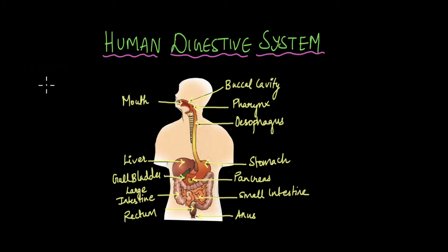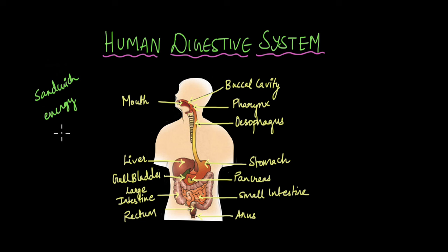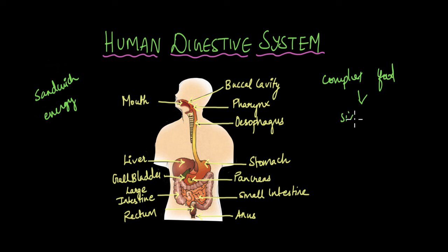Say you just ate a nice meal, a sandwich, a box of juice or something like that. Have you ever wondered how the substances in your sandwich and in your juice are converted to energy and other substances that can be used by the cell? Well, that is taken care of by the digestive system. And the process by which the complex substances in our food are converted to simpler substances is known as digestion.